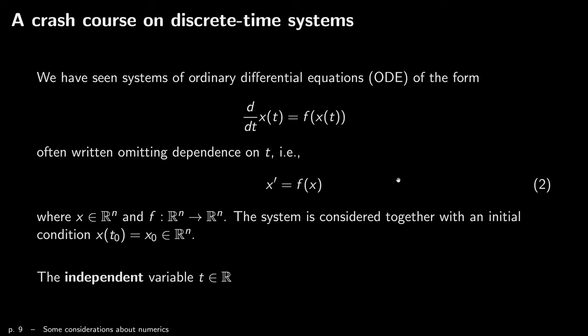Let me spend a minute or two to discuss discrete time systems, because this is a discrete time system — something I haven't presented yet, and maybe you haven't seen at all. What you've seen so far are ordinary differential equations — models of this form: the time derivative of x(t) is a function of x(t), where we often forgot to write the dependence on t, but we know it's there. We write x' = f(x), where x is typically a vector in R^n and f is a vector field from R^n to R^n, with an initial condition also in R^n. The important thing is that the independent variable t is a real variable.